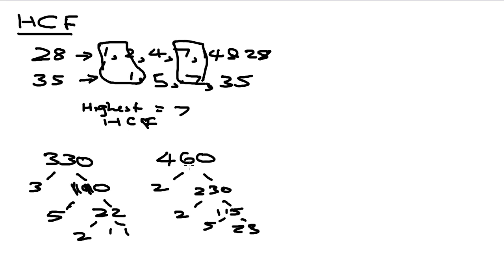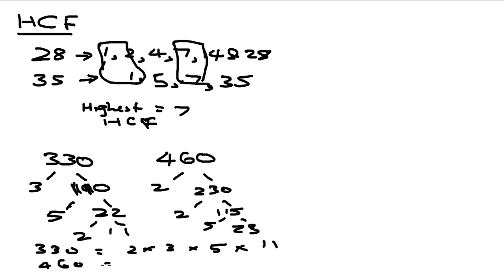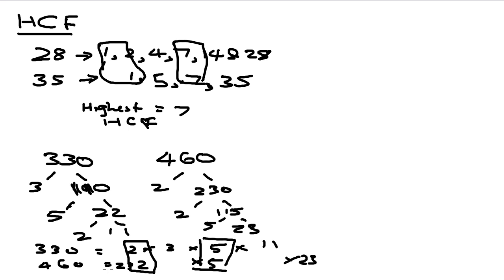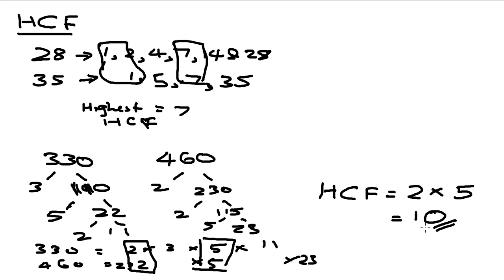So here you can see all the prime factors these numbers are made up of. You line them up: 330 equals 2 times 3 times 5 times 11, and 460 equals 2 times 2 times 5 times 23. You then find the common ones — in this case there's a 2 and a 5. The HCF is calculated by multiplying the common factors, so HCF is 2 times 5, which is 10.